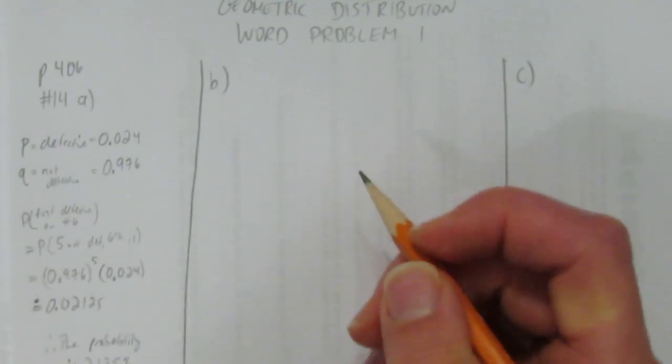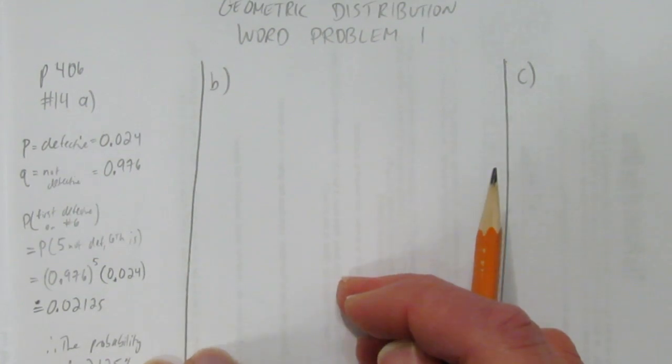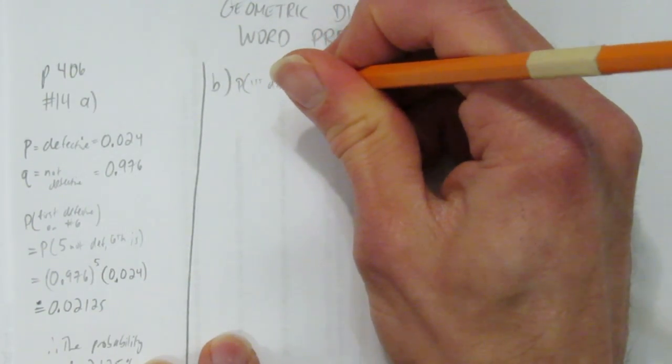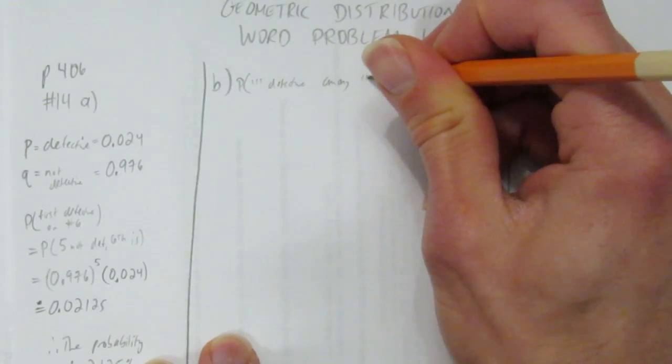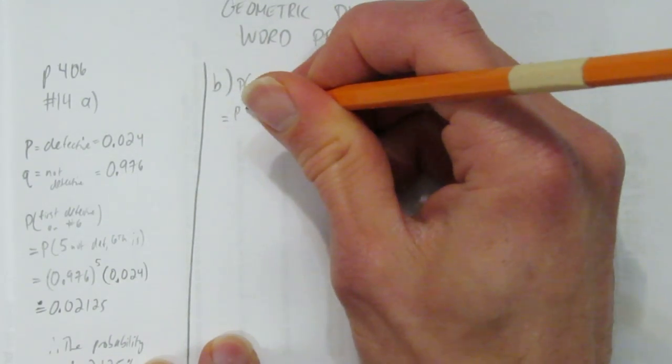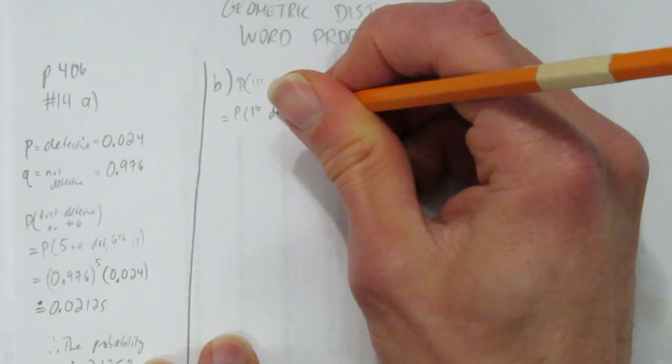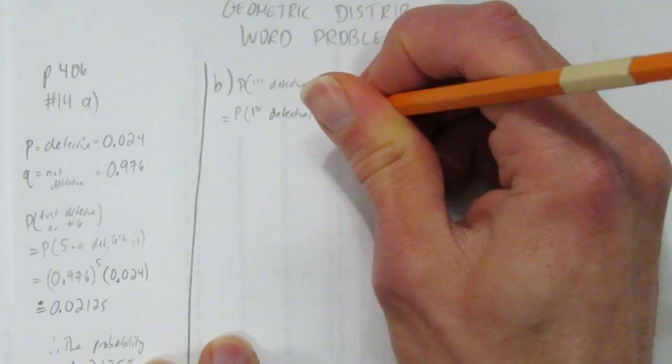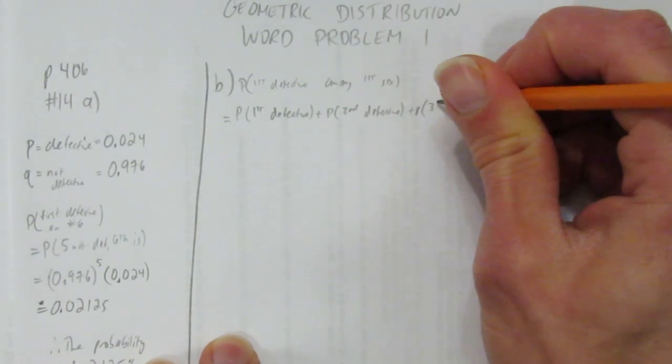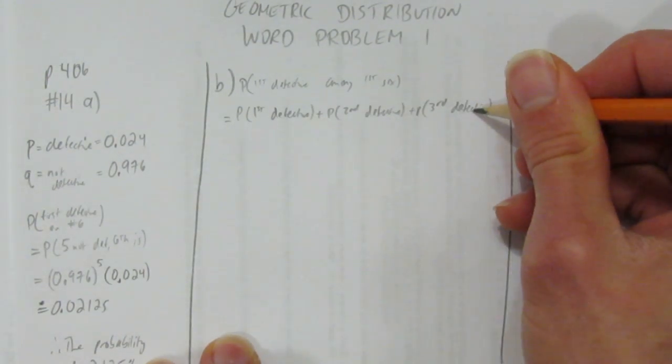Question B is trickier. It just has more work. It says, what's the probability that the first defective circuit board will be among the first six tested? Well, here's the tricky part. That's the probability that the first defective one is the first thing, plus the probability that the second thing is defective, plus the probability that the third one is defective. The understanding is, if the third one is defective, the other two are okay.